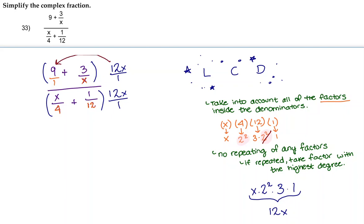So 12x over 1 times 9 over 1 is going to give us 108x. 12x over 1 times 3 over x is going to give us 36x over x.